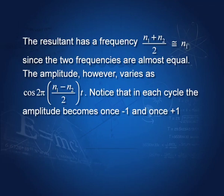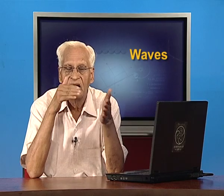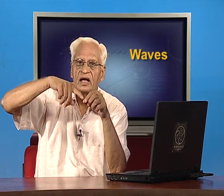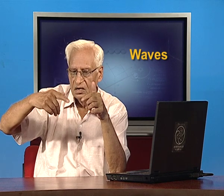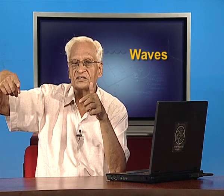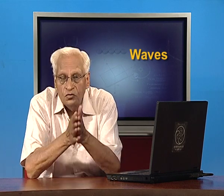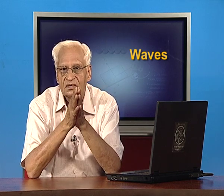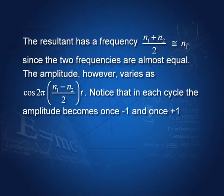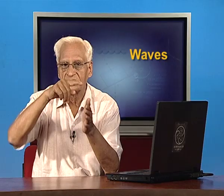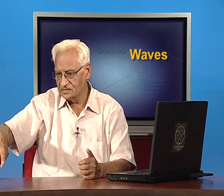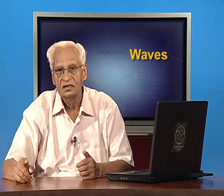The cosine function becomes +1 and −1 in one cycle, so the amplitude is maximum twice per cycle. The loudness of sound depends on the square of the amplitude, so in one cycle there are two instances of maximum loudness — once when the amplitude is large in one direction and once in the other direction.